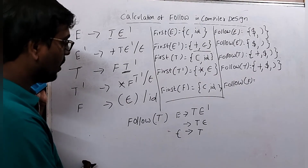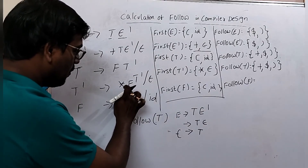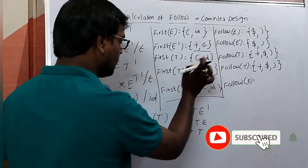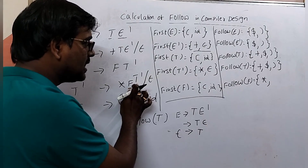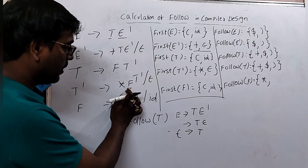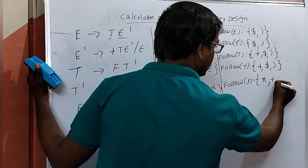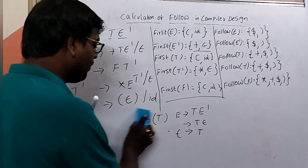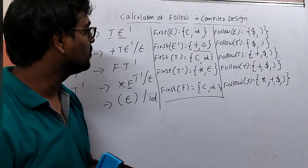Finally, FOLLOW of F: F appears in T → FT'. After F we have T', so FOLLOW of F = FIRST(T') minus epsilon = {*}. Since FIRST(T') contains epsilon, if T' is replaced with epsilon there is no symbol after F, so we also include FOLLOW(T') = {+, $, )}. Therefore FOLLOW(F) = {*, +, $, )}. This is the way to calculate FOLLOW for a given grammar — simply follow the rules and it is very easy to implement. Thank you.